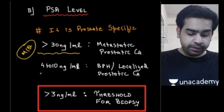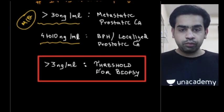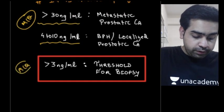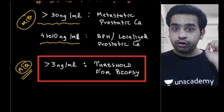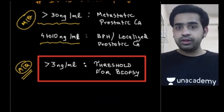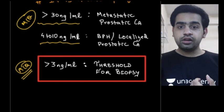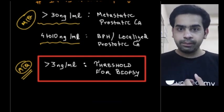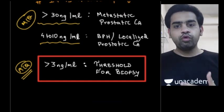For localized prostatic carcinoma, PSA is usually within 10, similar to BPH. If PSA is between 4 and 10, the patient may have BPH or prostatic carcinoma — we don't know. That is why we have guidelines: the threshold for advising a prostatic biopsy is a PSA level of more than 3 nanograms per ml. Above 3, you are justified in ordering a biopsy to rule out prostatic carcinoma.